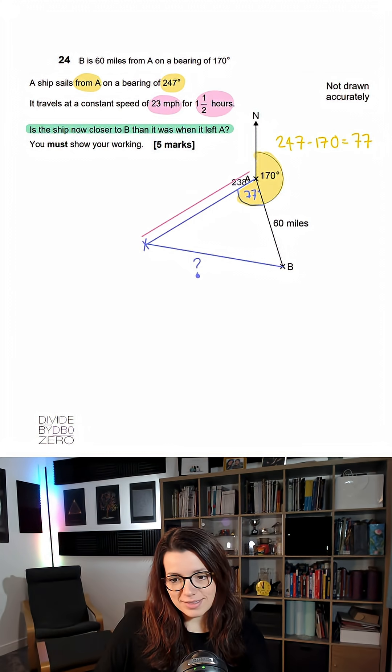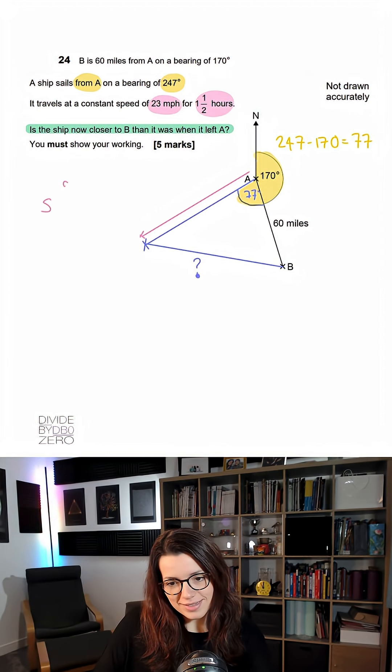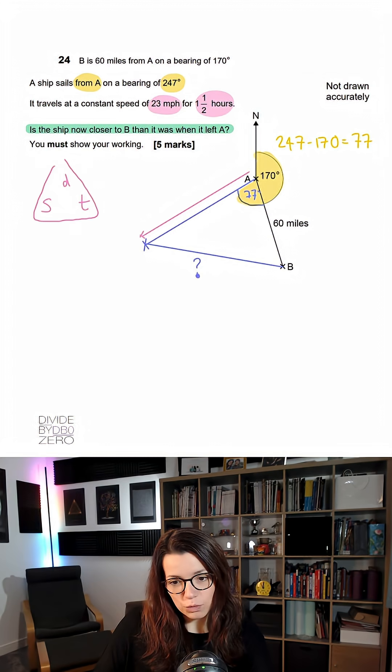Now we can work out this distance or this length of the triangle by using speed, distance and time. I like to use a formula triangle here.